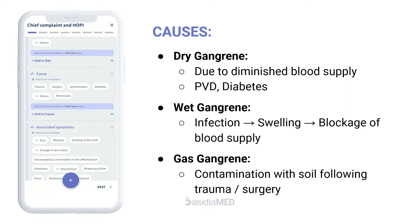Causes: dry gangrene results from diminished blood supply; common causes include peripheral vascular disease and diabetes. Wet gangrene usually results due to infection in the tissues — the swelling resulting from infection and inflammation leads to blockage of the blood vessels supplying the area. Gas gangrene, or clostridial myonecrosis, results from contamination with soil or manure following trauma or surgery.